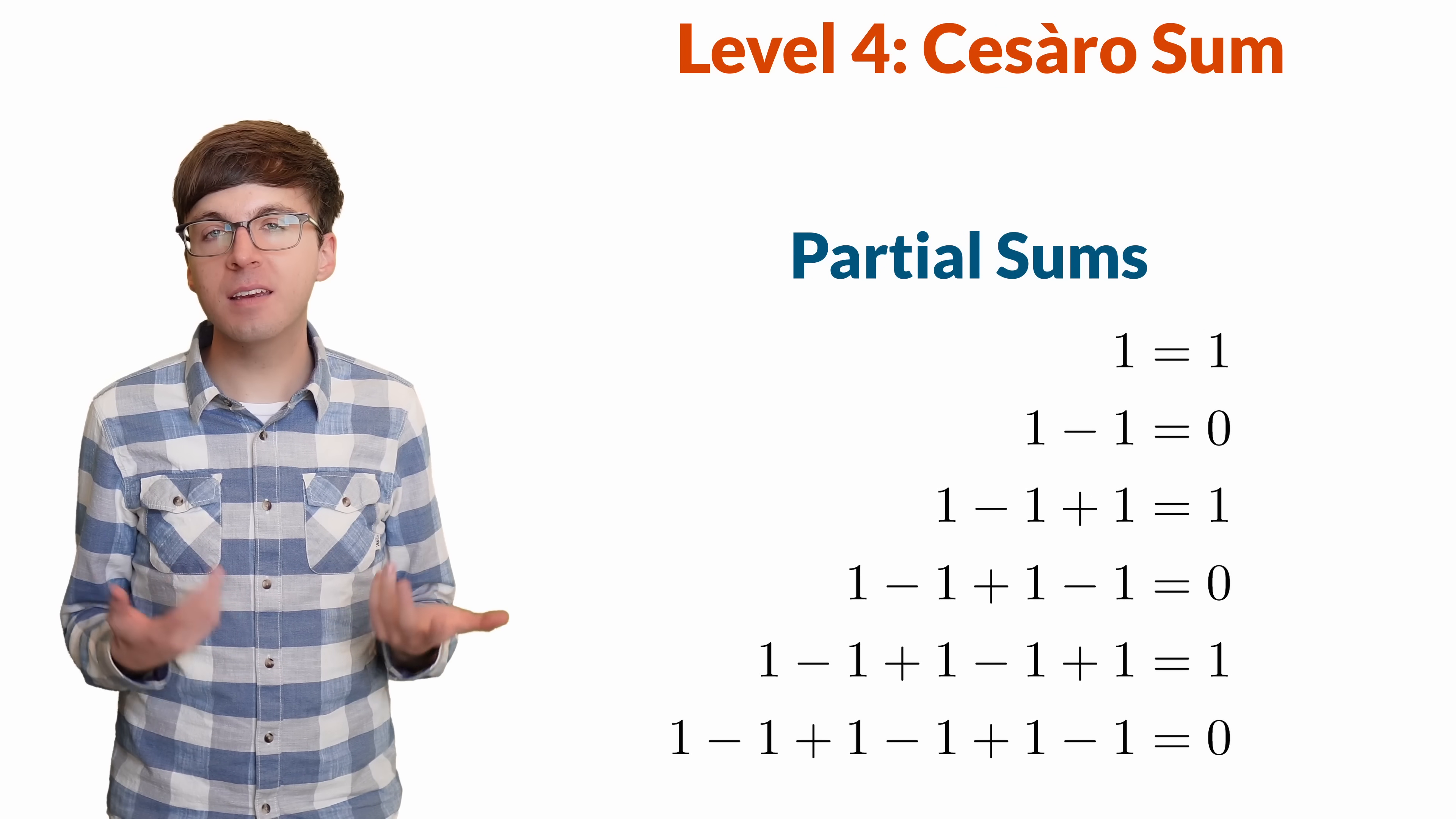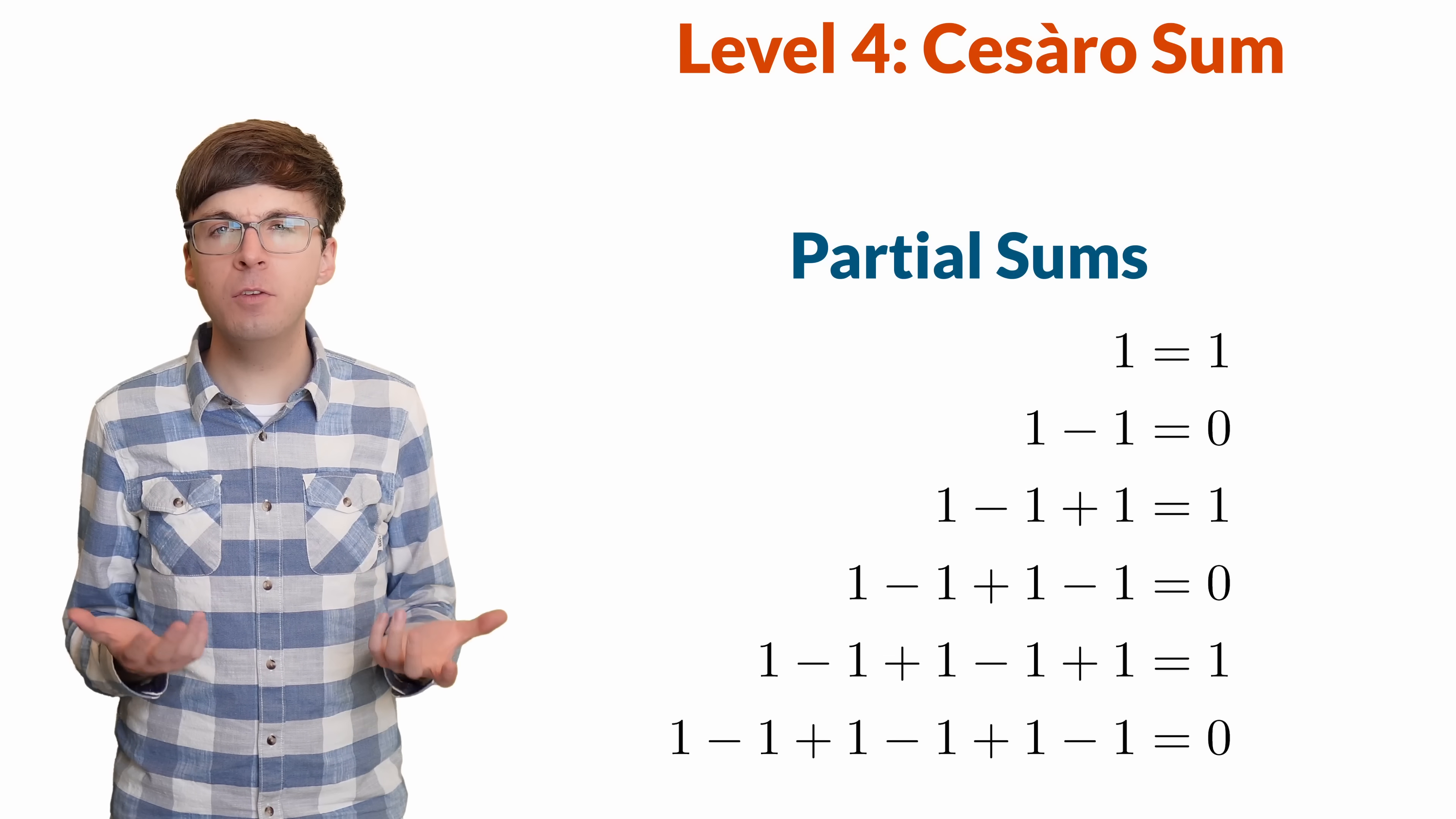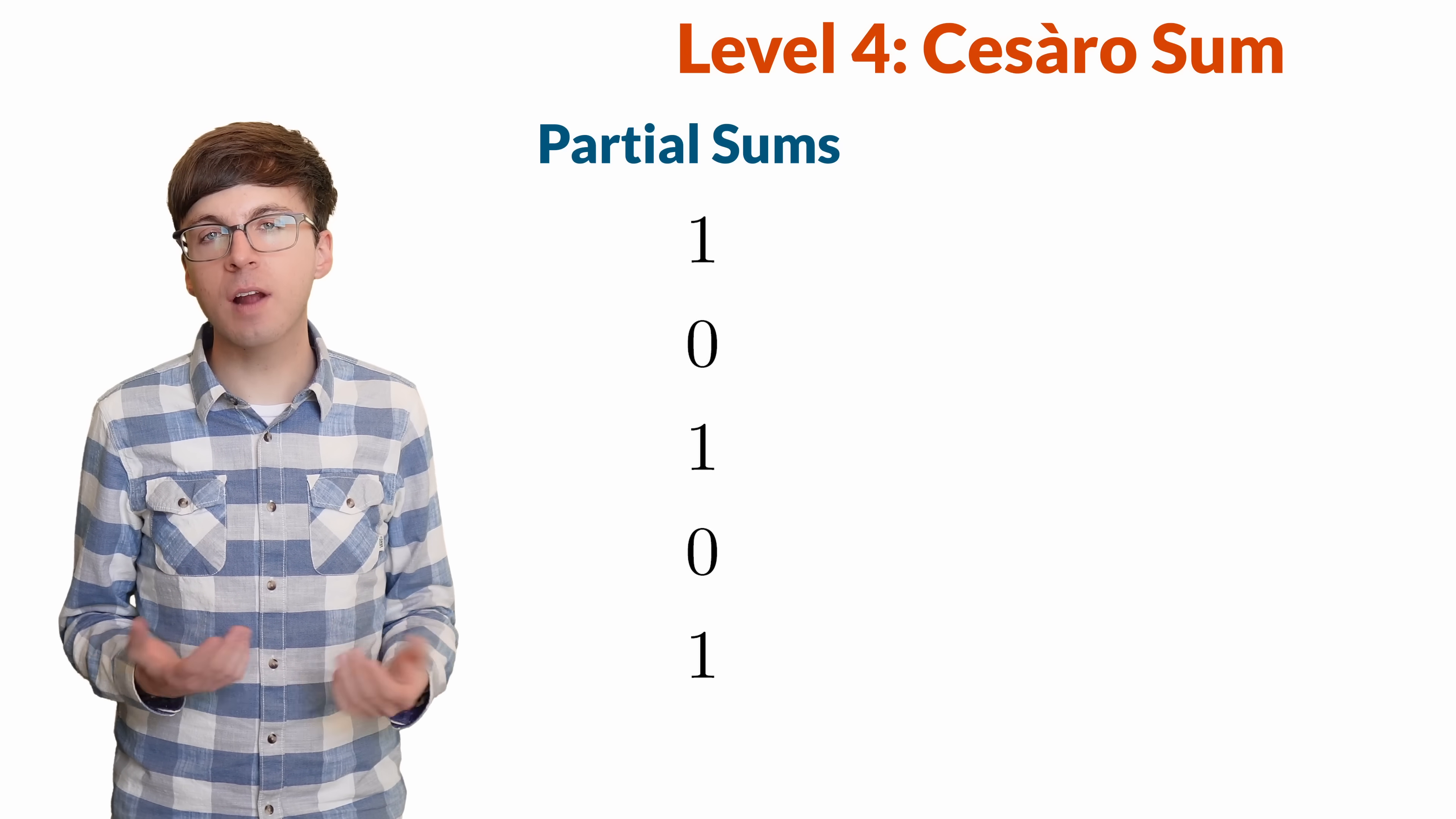For level 4, let's think again about the partial sums. These partial sums don't converge to any one specific value, but they do have some pretty nice structure. Half the time they're 0, and half the time they're 1. So maybe it is reasonable to assign the value of 1 half for this series. Ernesto Cesaro defined this approach, which is called Cesaro summation. Instead of looking at the limits of the partial sums, let's look at their averages.